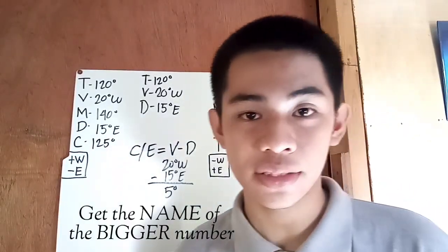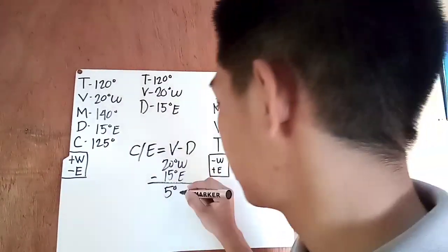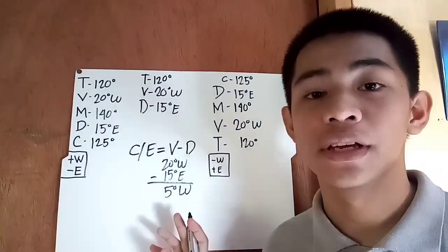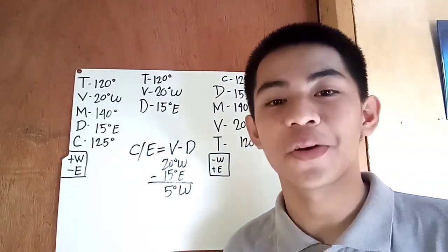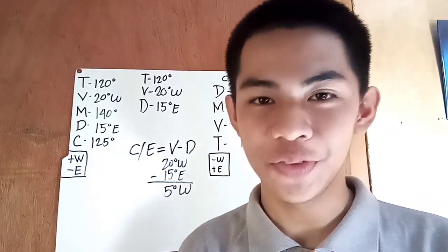And the number who is the biggest is you will get the name. So in this case it's the west, so 5 degrees westerly. That is our compass error. Thank you for listening and god bless.